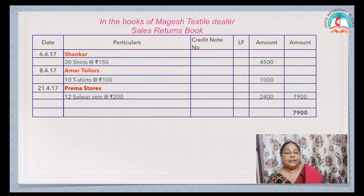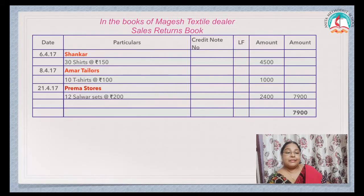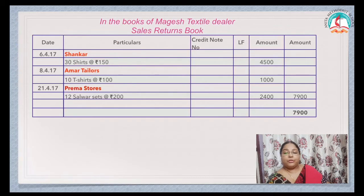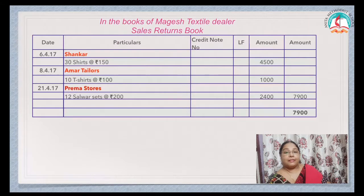Shankar is returning 30 shirts at the rate of ₹150 — 30 × 150 = ₹4,500. Amar Tailors: 10 t-shirts at the rate of ₹100 — 10 × 100 = ₹1,000. Prema Stores: 12 salwar sets at the rate of ₹200 — 12 × 200 = ₹2,400. Add all the amounts in the inner column and give it in the outer column — total ₹7,900, which is the total of the Sales Returns Book.